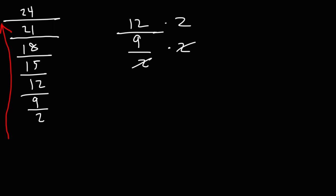2 divided by 2 is 1, so those 2s will cancel. And so we have 12 times 2, which is 24, divided by 9.